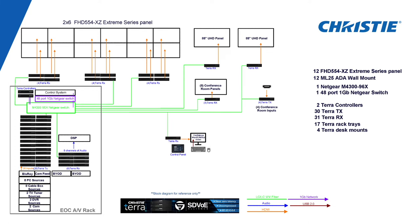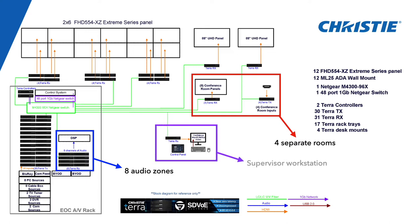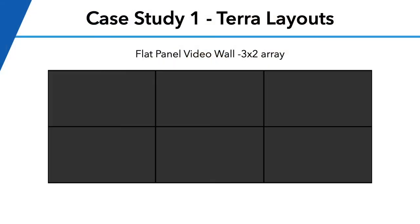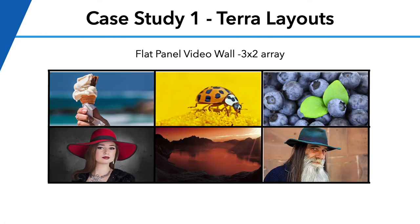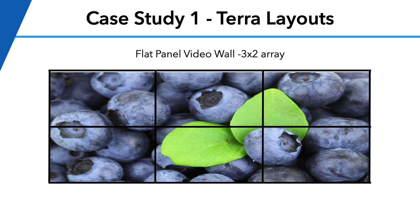Here's our first case study — an EOC here in the U.S. Really simple: a two-by-six array of Christie panels, each panel with a receiver, across four separate conference rooms. We had eight dedicated audio zones with receivers going into the DSP, plus a supervisor workstation. With that design, they can route video to every panel, recall different layouts, snap content to a two-by-two, adjust aspect ratio, and move content around. These are just layout recalls in Terra on those video walls — all the way up to filling the full video wall, always maintaining aspect ratio.